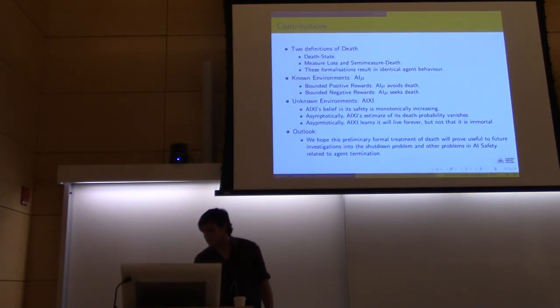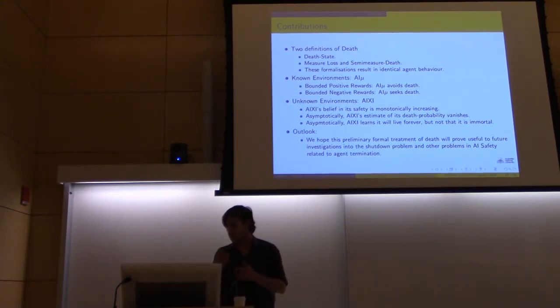Those are the most interesting results I feel that we found. Obviously this is far from a comprehensive investigation of this topic, but we hope that this preliminary formal treatment and sort of machinery for talking about death for RL agents might be useful to anyone in the future who wants to consider problems in AI safety that relate to agent termination, like the shutdown problem or any of the containment strategies that we've talked about in previous talks. Thank you very much for your time.